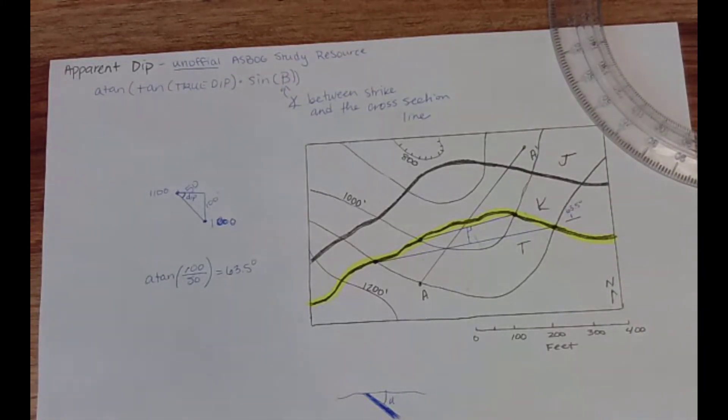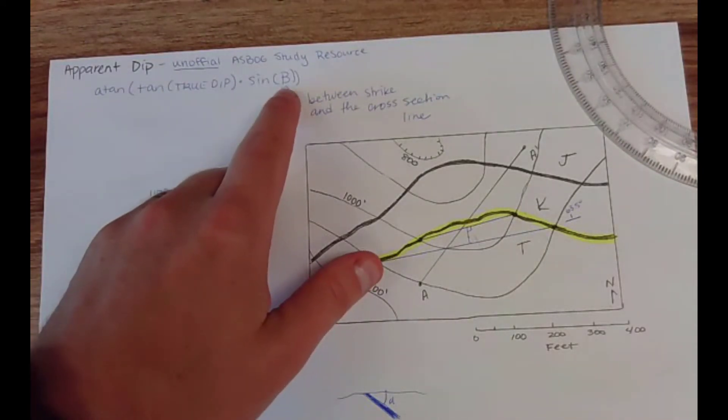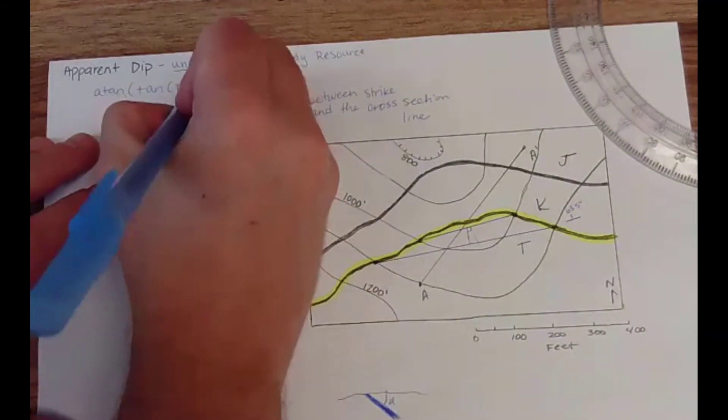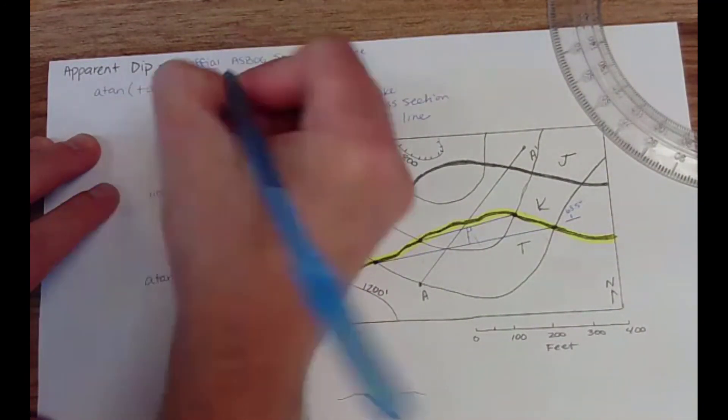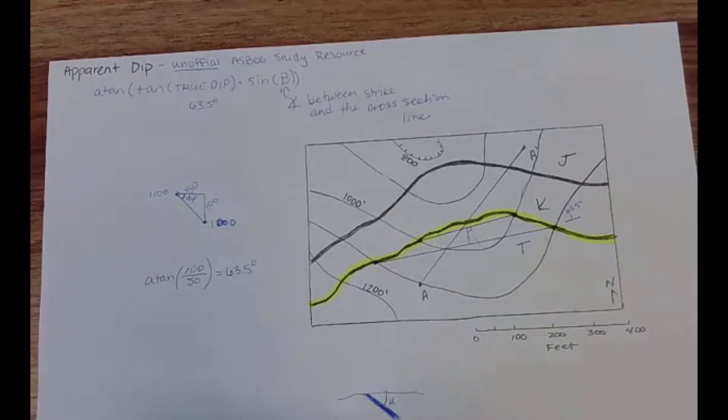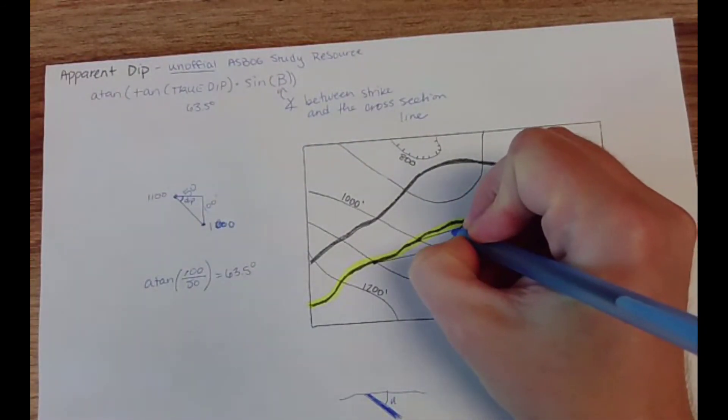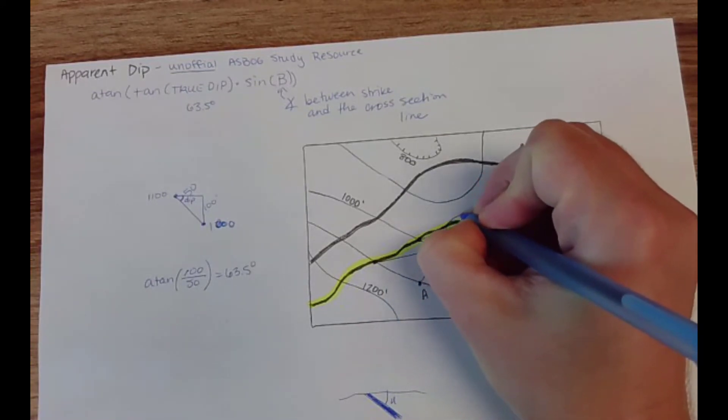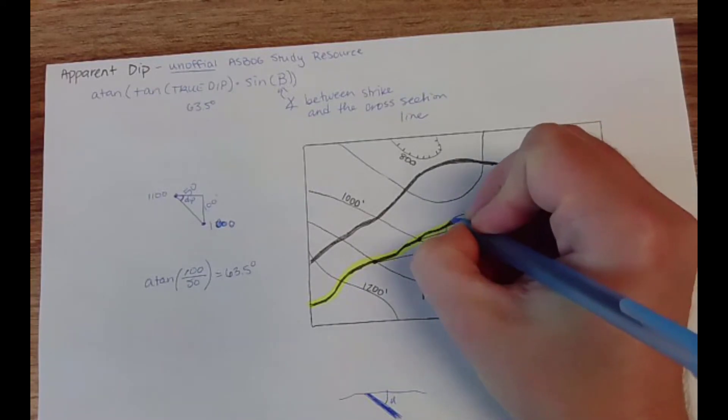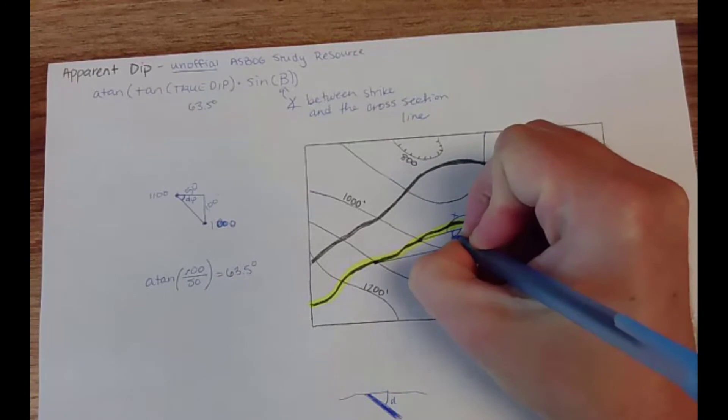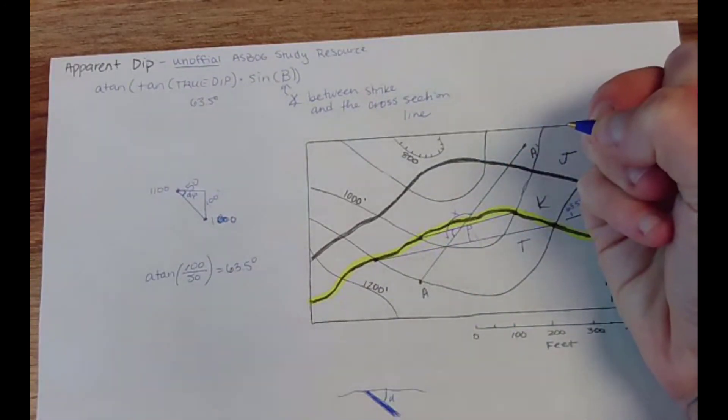So now I need to figure out what beta is. So I know now that true dip is 63.5 degrees and I need to come in with beta. So this is my direction of strike, this is an angle between strike and the cross section line, and this is also an angle between strike and the cross section line. This one is greater than 90 so it is not the one we want. This one's less than 90 so we definitely want this.